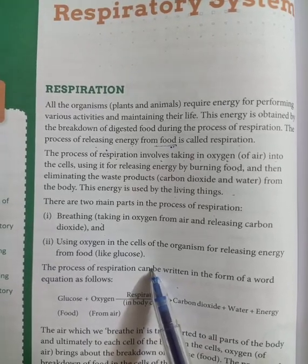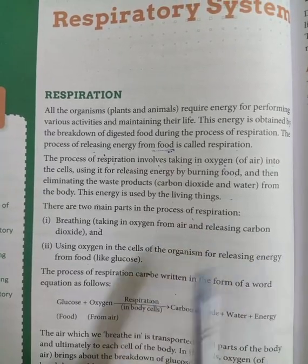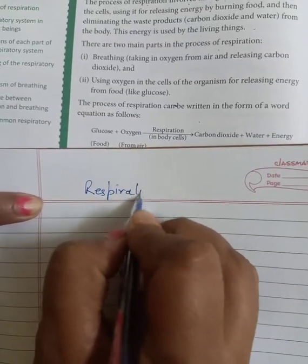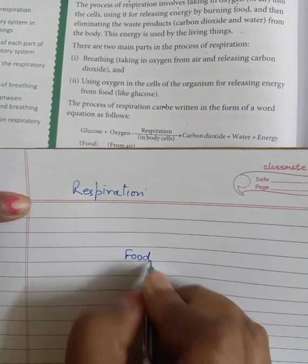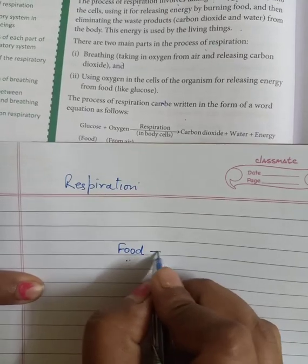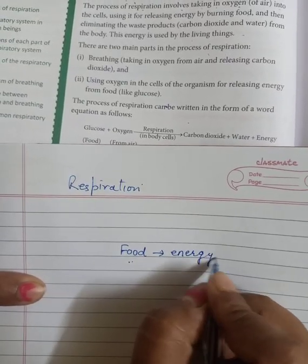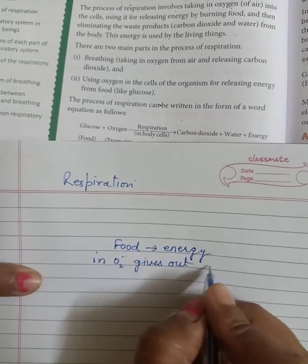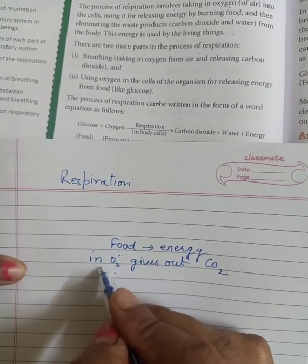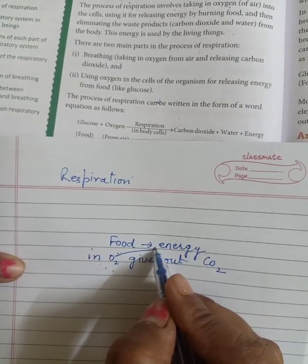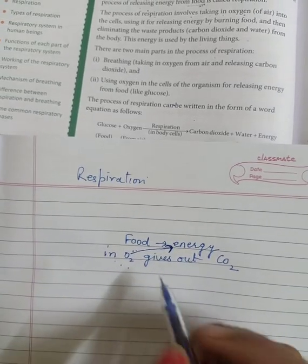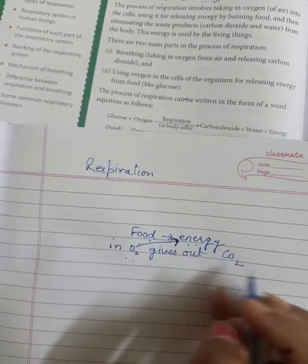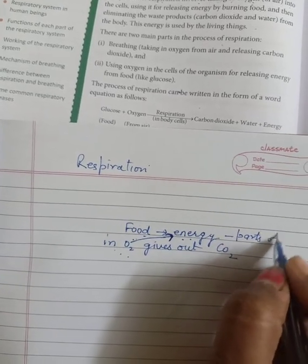As it is given in your book, in respiration we have food in our body. When we eat food, that food gives us energy. We also take in oxygen and give out carbon dioxide. That oxygen gets mixed with the energy from food because without oxygen we can't survive. So the food gives us energy, and that energy goes to different parts of the body.